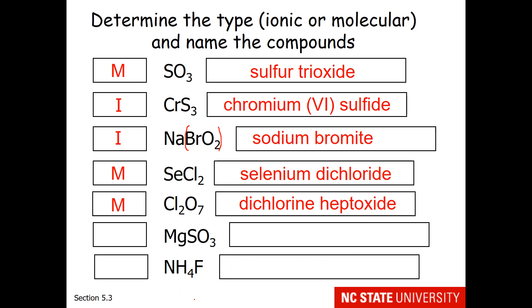MgSO3. Well, magnesium gives it away. That would be ionic. So this SO3 is a polyatomic. So you're going to have to think through, how do I name this polyatomic ion? Magnesium is in group 2, so we know its oxidation state. I hope you come up with magnesium sulfite.